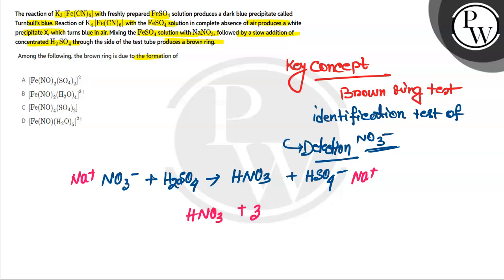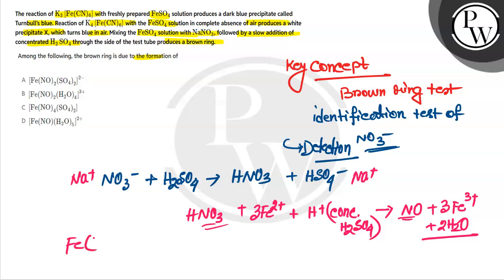In the test tube, when we add H2SO4, it reacts with Fe2+ in acidic medium with concentrated H2SO4. Then NO is formed - nitric acid converts to nitrosyl - producing 3Fe3+ plus 2H2O, and NO3- converts to NO.